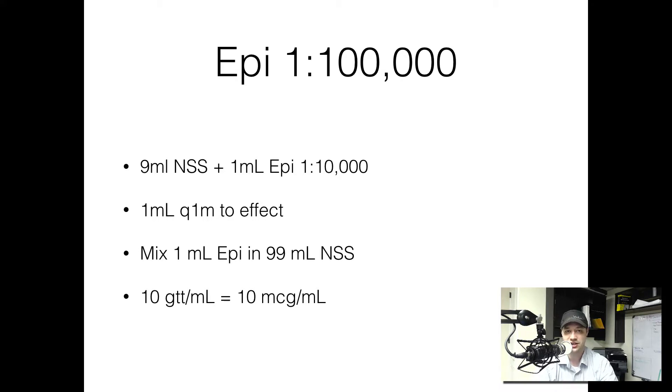We're going to take a 9 cc flush of normal saline, or if you have a bag of normal saline, you can just draw out 9 cc's. Then take the needle, put that into your code-dose epi, draw out 1 milliliter. So you're going to have 10 mLs total: 9 of normal saline and 1 of your code-dose 1 in 10,000 epinephrine. This is going to make the concentration 1 in 100,000 for the epinephrine.